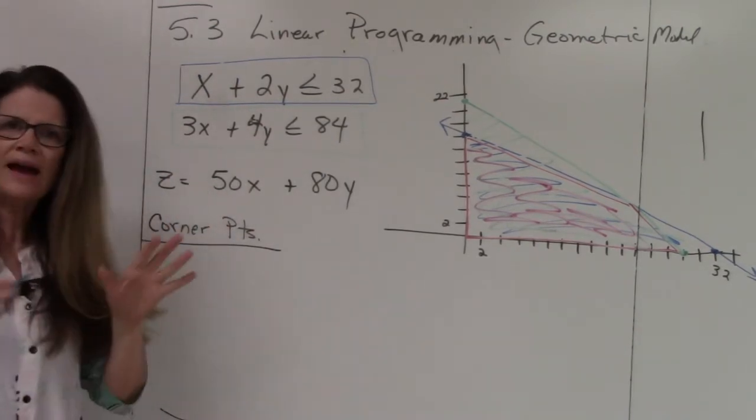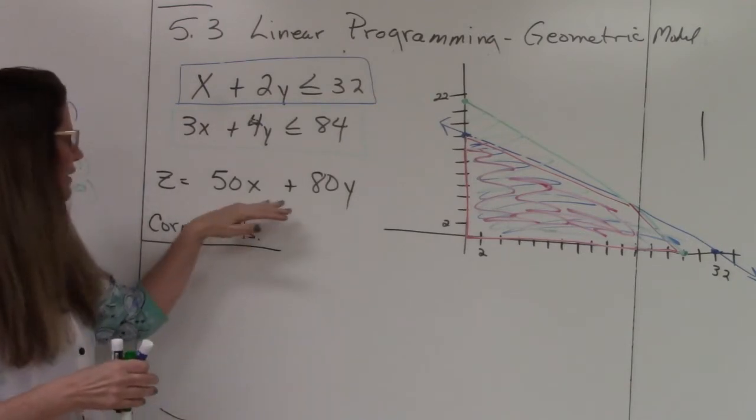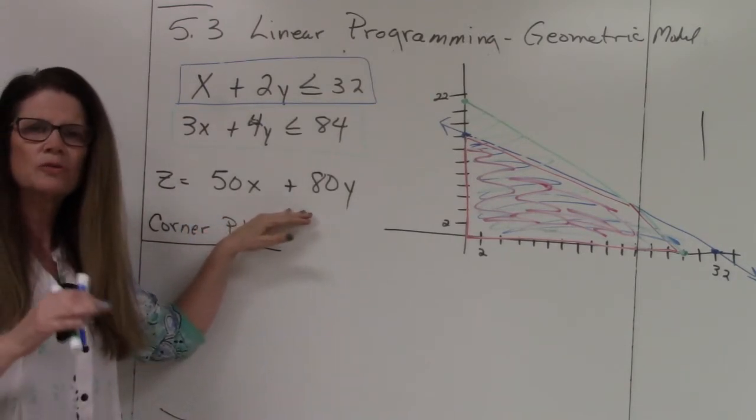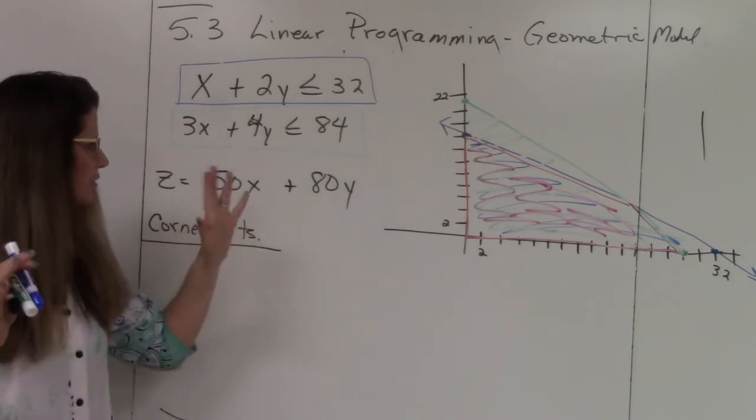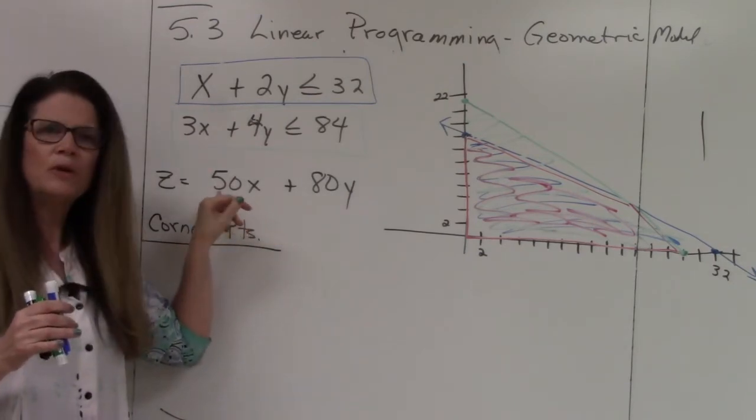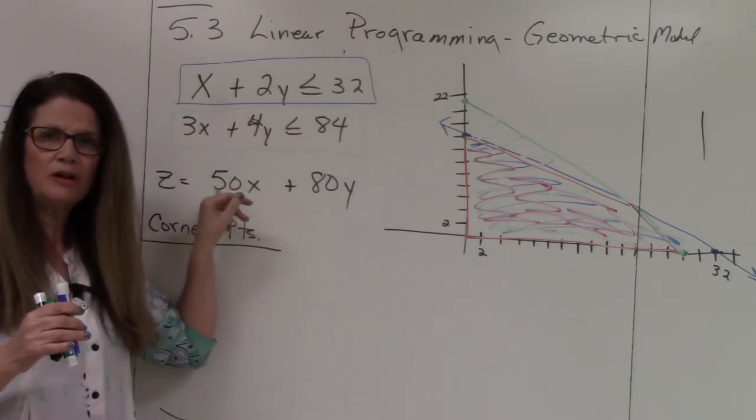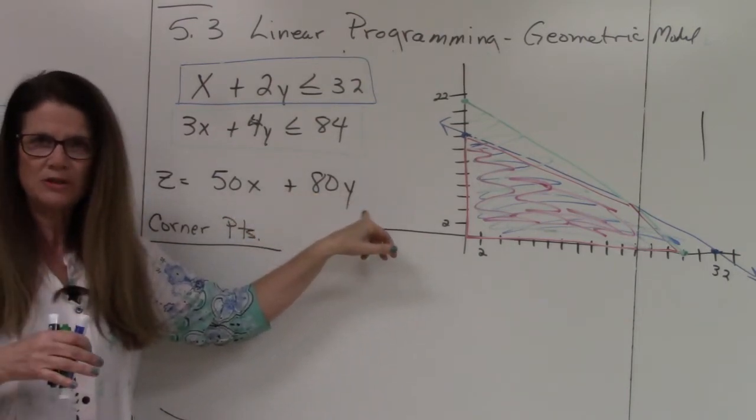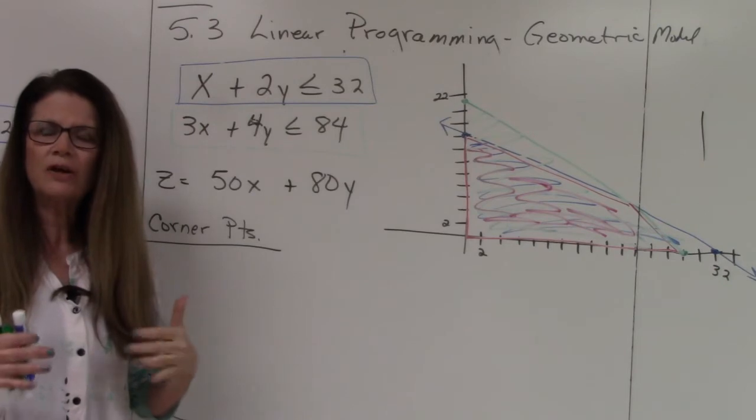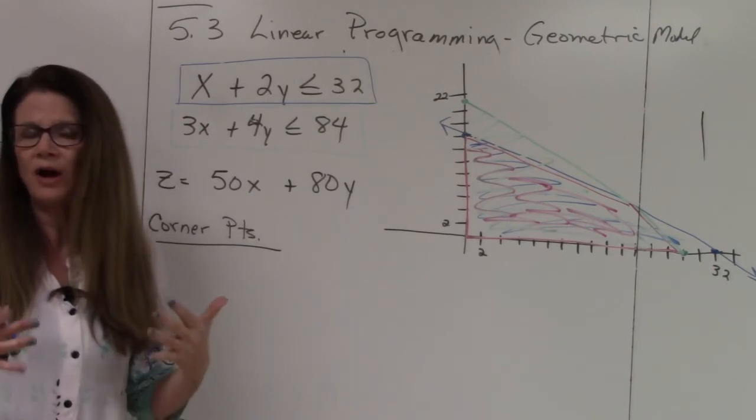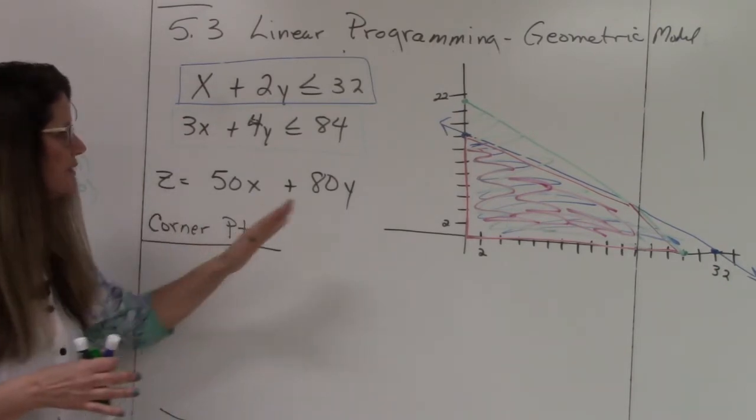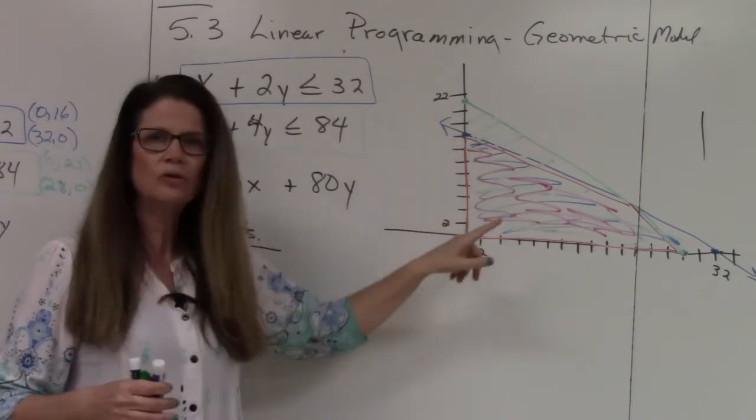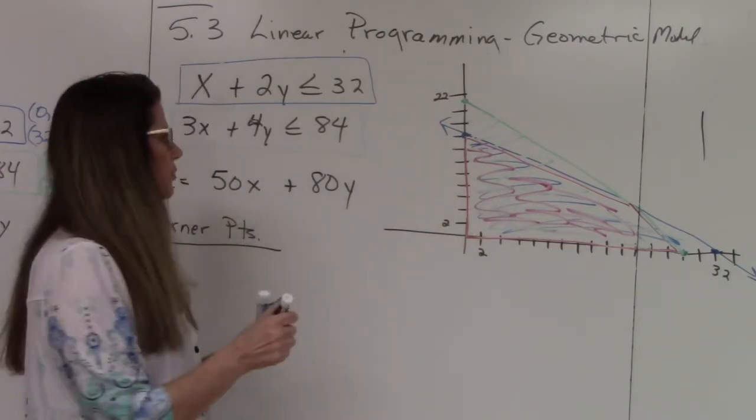And then what is added, what's new in 5.3 is this objective function. So remember the objective for this particular problem is, we want to have a profit of $50 per standard tent and $80 per expedition tent. So now we need to figure out, okay, what's the maximum profit that I can make? Well, maximums only happen at the corner points.